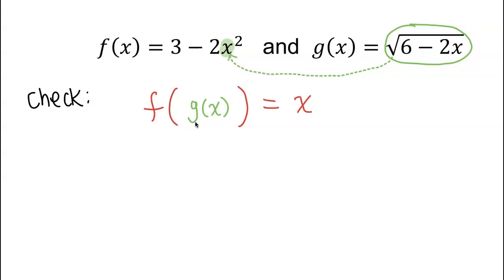So I'm going to plug in that square root notation right into that x. So here is f of g of x. You start by writing the 3 first. You see, it has the 3, minus 2.